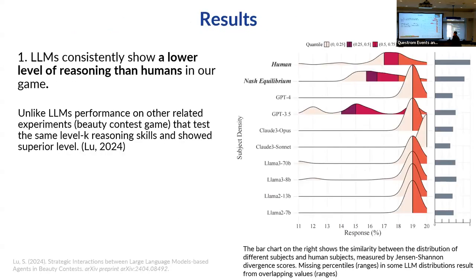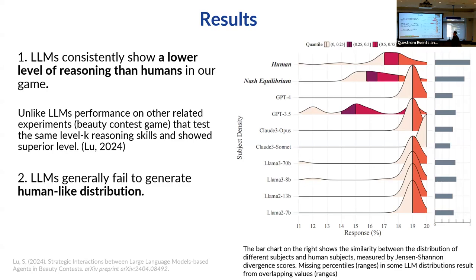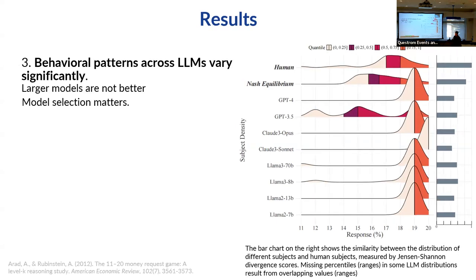LLMs consistently show lower levels of reasoning than humans. On this graph, the x-axis shows responses from 11 to 20 as a density plot. You can see different human distributions at the top, the Nash equilibrium, GPT, Claude, LLaMA, and others — every single one is significantly different in distribution. Unlike some related experiments like the beauty contest game, which showed similar or even superior levels of k-reasoning, here all LLMs generally fail. Behavior patterns across LLMs also vary significantly.